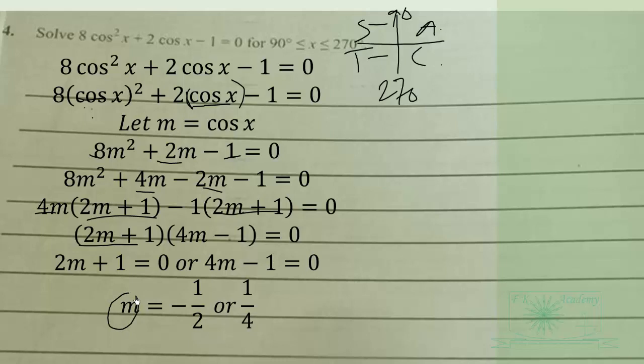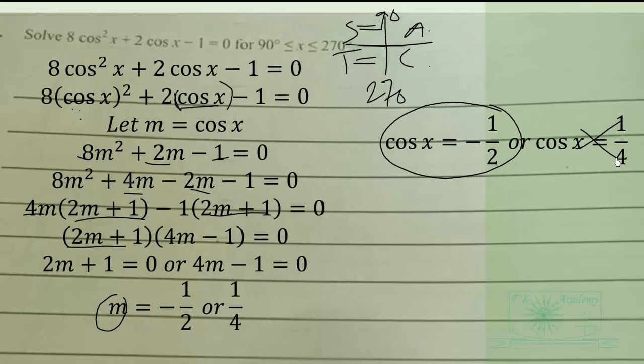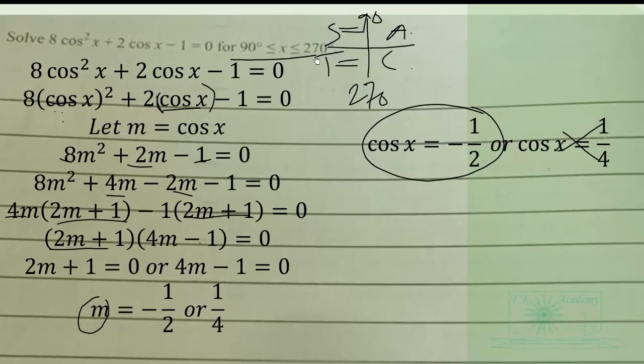So we are going to make use of cos X equals negative 1 over 2 because we are going to discard this one since it is not part of the range we are looking for.